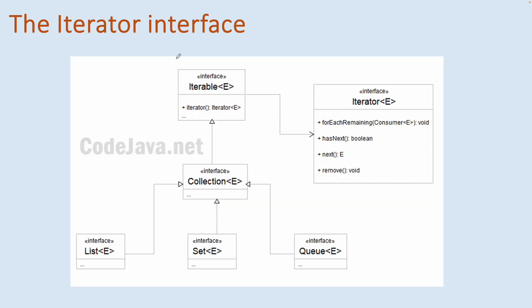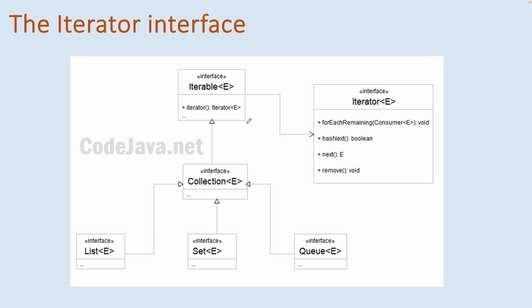Let's understand the iterator interface in the Java collections framework. All the key collection types such as List, Set, and Queue are subtypes of the Collection interface. The List, Set, and Queue interfaces implement the Collection interface, and Collection interface is a subtype of the Iterable interface. The Iterable interface defines the method iterator() that returns an iterator of the underlying collection, so programmers can use iterator to traverse elements in a collection.